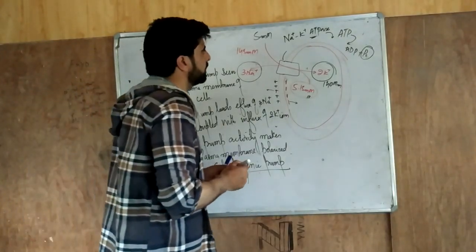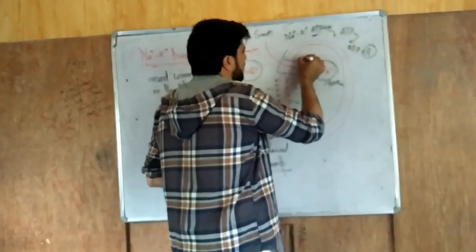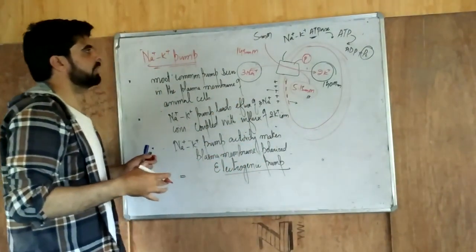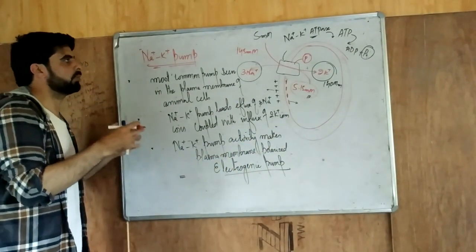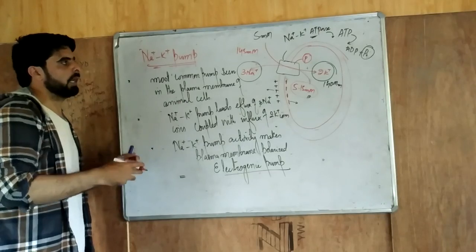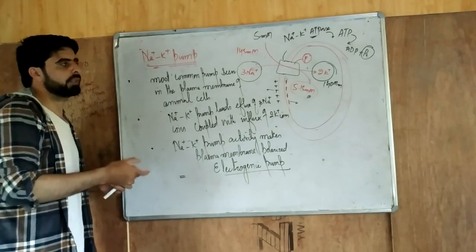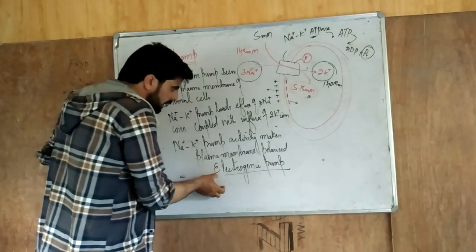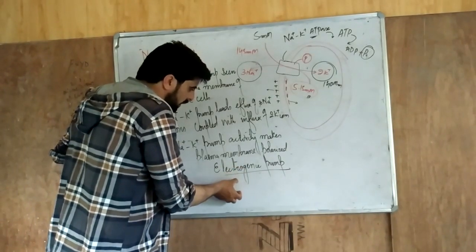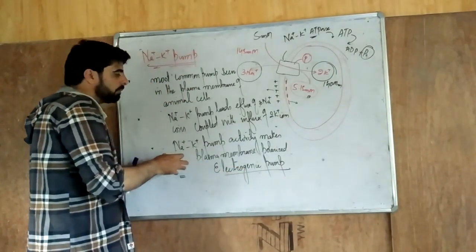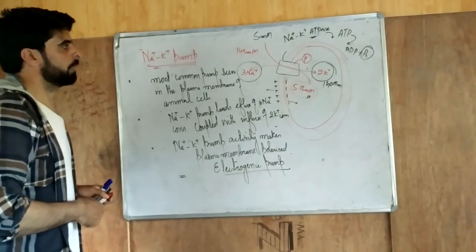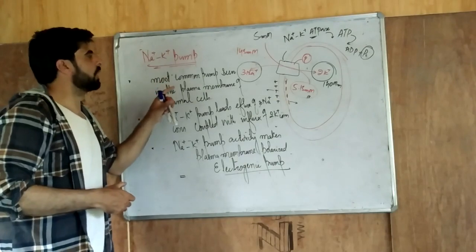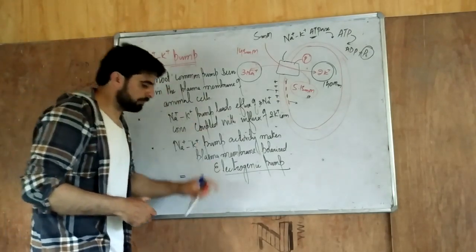The sodium-potassium pump is dependent on phosphate — phosphorylation of the sodium-potassium pump activates it and leads to movement of ions from lower to higher concentration. This makes it an electrogenic pump, meaning it makes the plasma membrane polarised. In the next part, we will see the structure of the sodium-potassium pump.